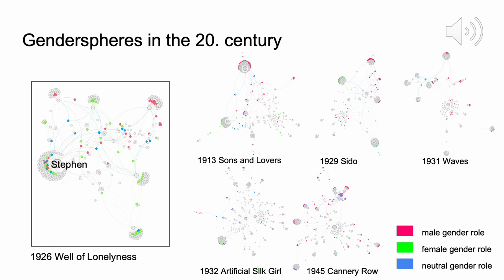Moving along our timeline towards the 20th century, we can see some very slight differences. Firstly, characters are described using fewer gender roles. Secondly, there are less clearly distinctive gender spheres. But still, characters described using mostly male gender roles outnumber characters described mainly by female or neutral roles. Again, we have one novel with a character clearly pushing the boundaries of binary gender categories — this is Stephen, who is the daughter of two parents that had been so certain their child would become a boy that they named the child before birth. The network also shows that a character described only using female roles can be situated between two characters described using only male roles, giving a more scattered gender sphere.